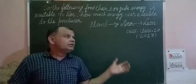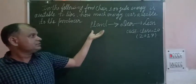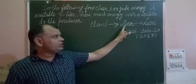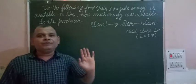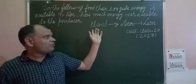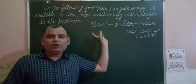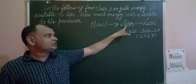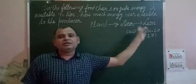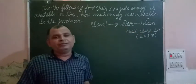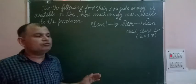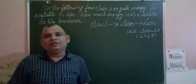So student, this is the food chain here: plant to deer and deer to lion, in which energy flows from plant to lion. Plant is the producer here, first consumer is deer, and second consumer is lion. Lion is also called tertiary consumer.